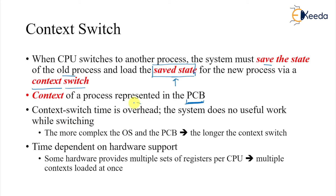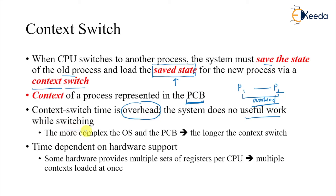This context switch time is pure overhead. When you are switching from process P1 to another process P2, no useful work is being done — that is why we call it overhead. The more complex the operating system, the longer the PCB will be, and the longer the context switch will take. It is also time-dependent on hardware support.